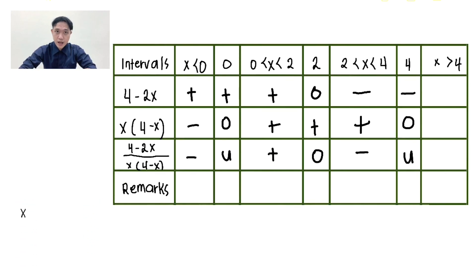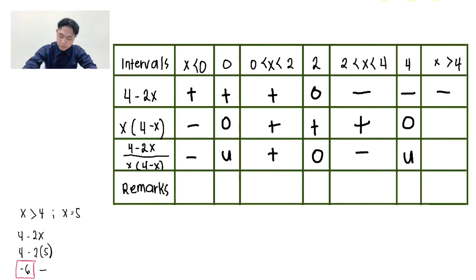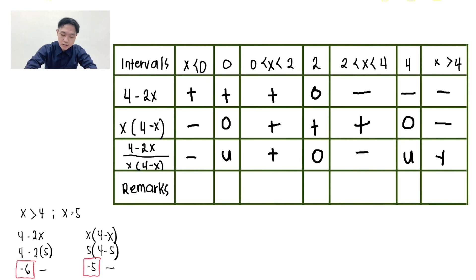For x greater than 4, let's try positive 5. Evaluate 4 minus 2x: 4 minus 2 times 5. The answer is negative 6, sign is negative. For x times the quantity of 4 minus x: 5 times 4 minus 5. The answer is negative 5, sign is negative. Negative divided by negative is positive.